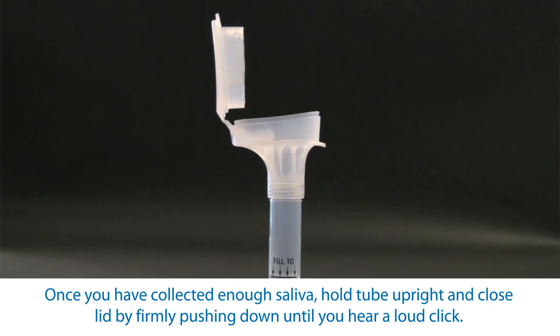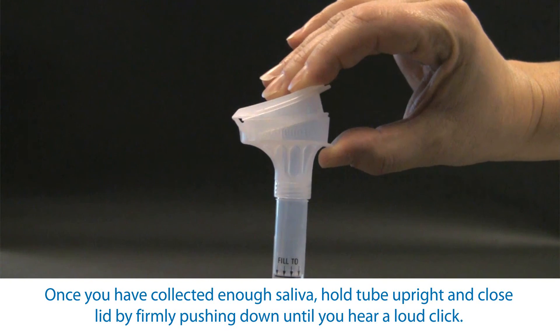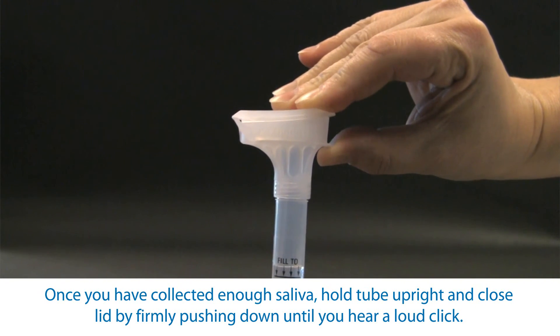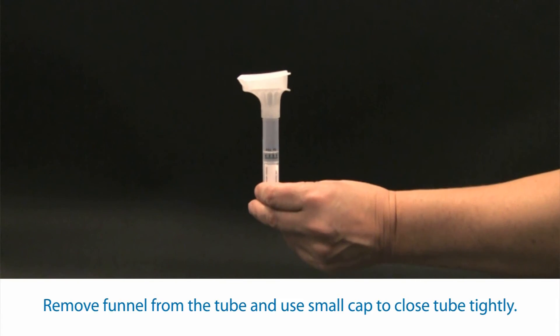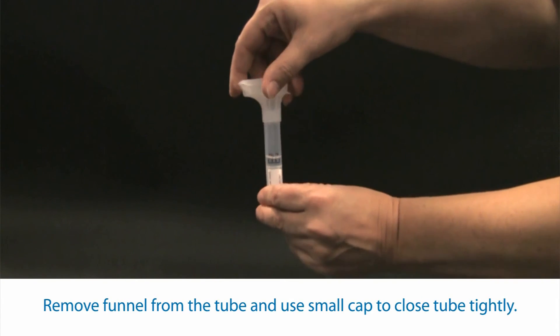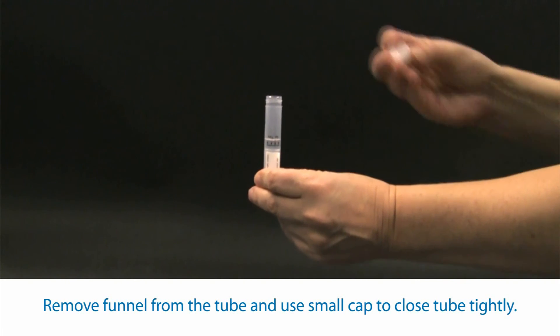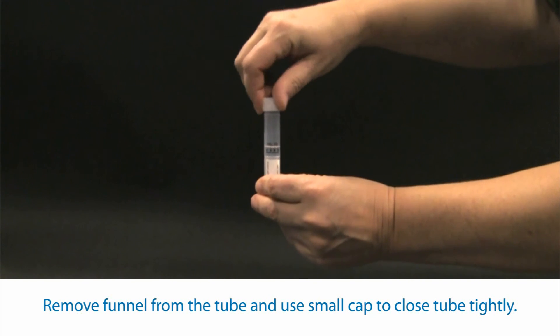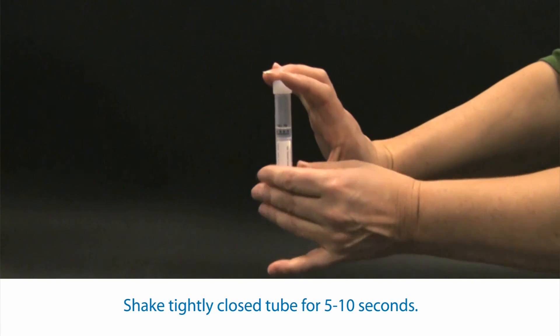Close the lid tightly by firmly pushing down until you hear a loud click. The origin liquid in the lid will be released into the tube to mix with the saliva. Continue to hold the tube upright while unscrewing the funnel from the tube. Use a small cap from the collection kit to close the tube tightly. Shake the tightly closed tube for 5 to 10 seconds or until the saliva and origin liquid are mixed.